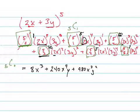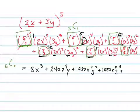Your next one is 10 times 4 times 27, which is 1080x squared y cubed, plus 5 times 2 times 81, which is 810xy to the fourth, and the last term is 243y to the fifth. So there's your expansion of that binomial, hence binomial expansion.